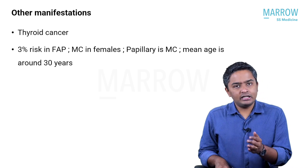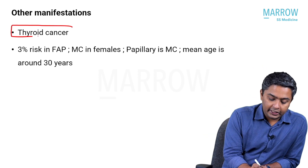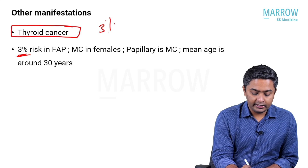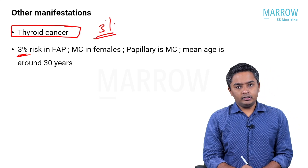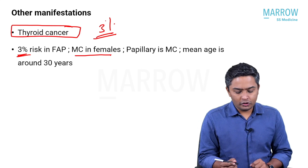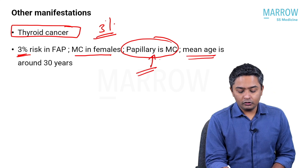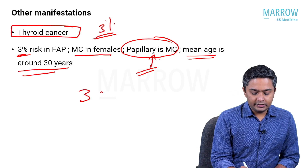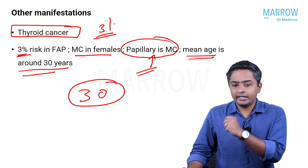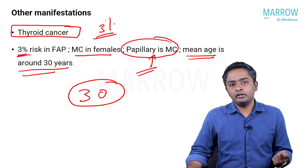What are the other manifestations outside of the GI tract? Thyroid cancer can occur in 3% of patients with FAP. Females are more commonly involved. Papillary thyroid carcinoma, which is generally the most common type of thyroid cancer, is also the most common thyroid cancer in FAP. The mean age of occurrence of thyroid cancer in FAP is usually around 30 years of age.